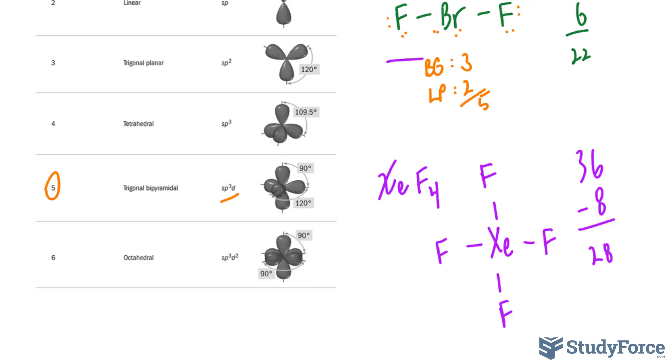So subtracting these, we have 28 electrons to distribute. We'll start with the peripheral atoms, the fluorines, distributing 6 electrons on each one. That's 12, 18, 24, and the other four will be around xenon, making it hypervalent. Xenon, therefore, has four bonding groups and two lone pairs. Adding that up, it's six.